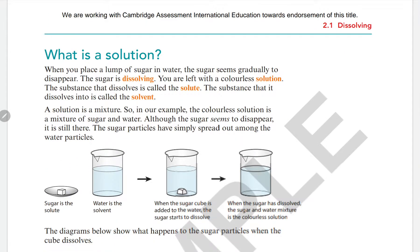Now let's learn what a solution is. When you place a lump of sugar in water, the sugar seems to gradually disappear — that is, the sugar is dissolving in the water.